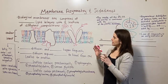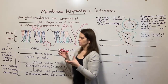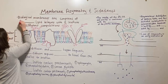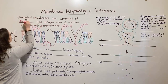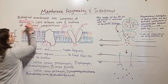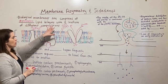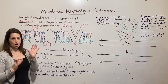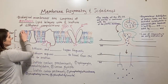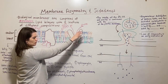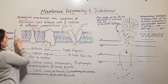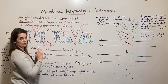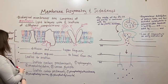So these lipid bilayers are asymmetric. What does this mean? It means they are composed of two leaflets that have different compositions. You have different types of phospholipids on the outer leaflet and different types of phospholipids on the inner leaflet. That's what we mean by the asymmetry.